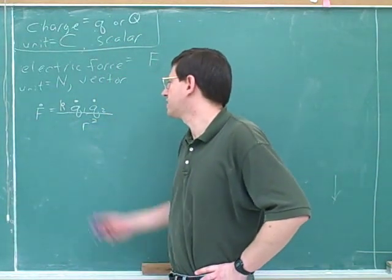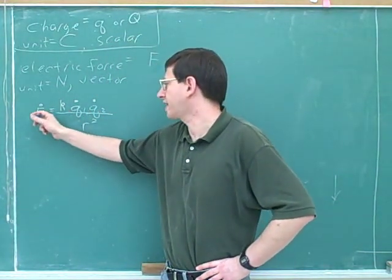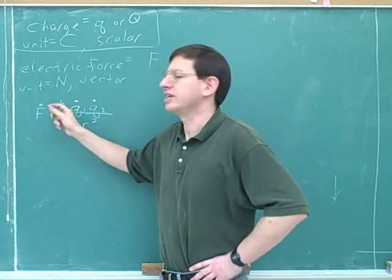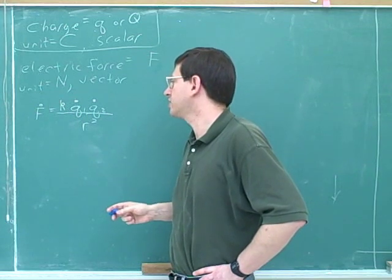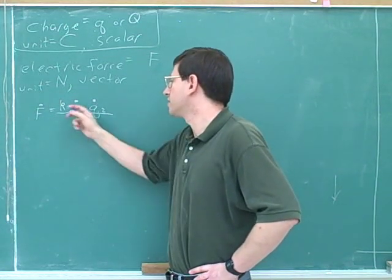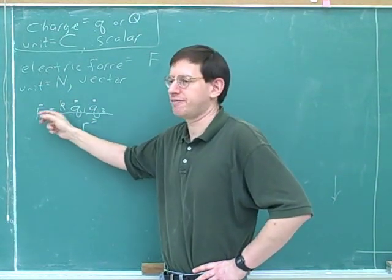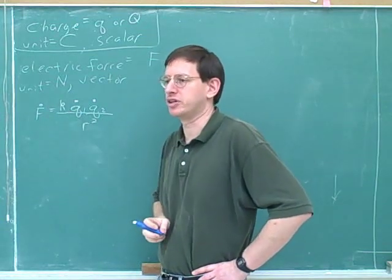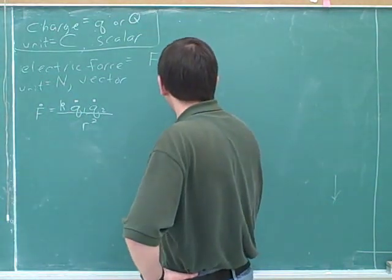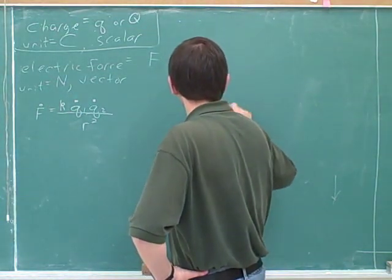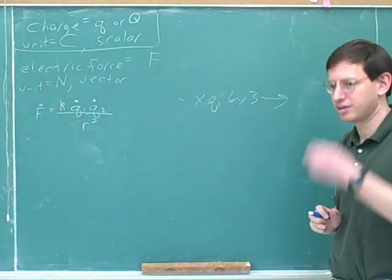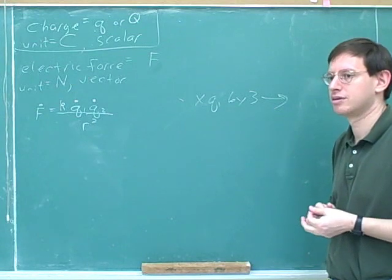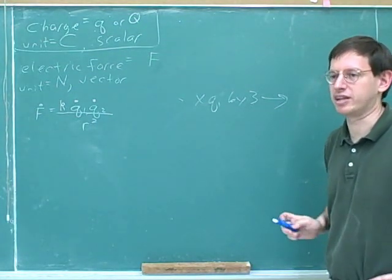Now we already saw how this tells us that the charges are directly related to f and r is indirectly related. But because this is all about multiplication and division they're not just directly and indirectly related, the charges are directly proportional to f and r is inversely proportional to f. For example if you multiply q1 by 3 what would happen to f? That's what it means to be directly proportional.